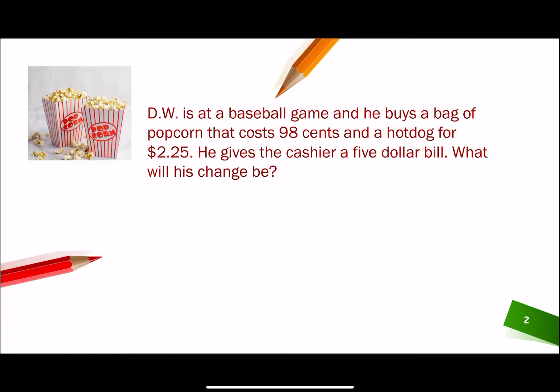Alright, so our first question says, DW is at a baseball game and he buys a bag of popcorn that costs 98 cents and a hot dog for $2.25. He gives the cashier a $5 bill. What will his change be? Now remember, all of these are two-step word problems. That's the title of this lesson is two-step word problems involving money.